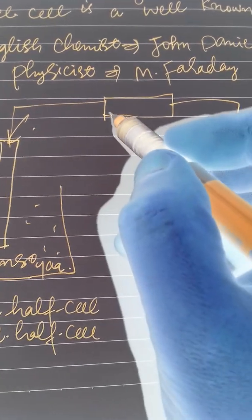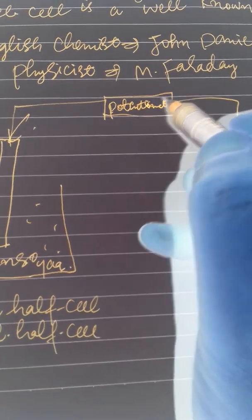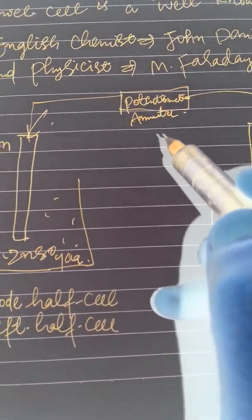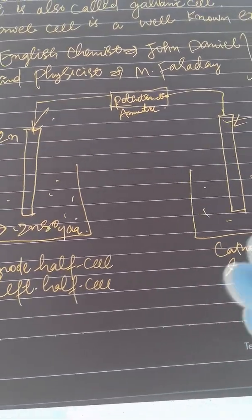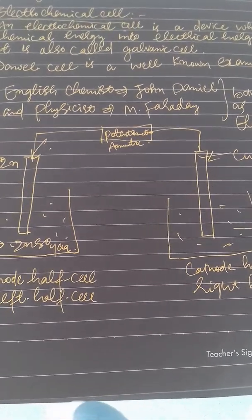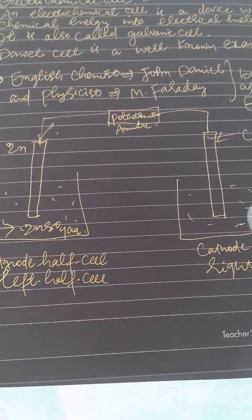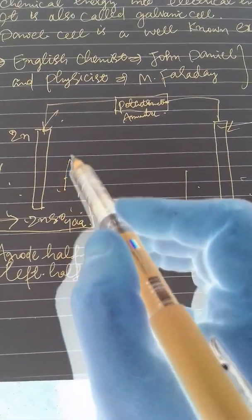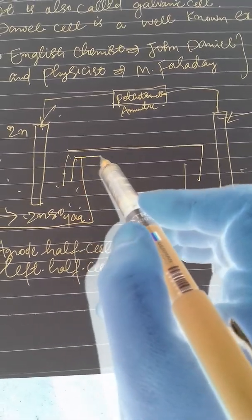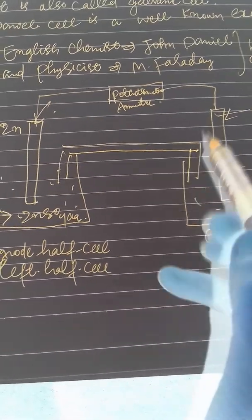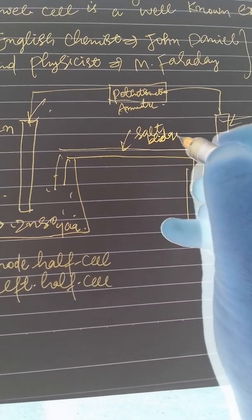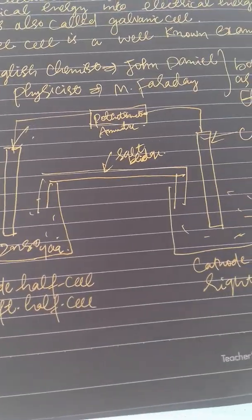To complete the electrochemical cell, we connect the two half-cells by means of a potentiometer and an ammeter. We also connect them using a U-shaped tube called a salt bridge. With the salt bridge in place, the electrochemical cell is now complete.